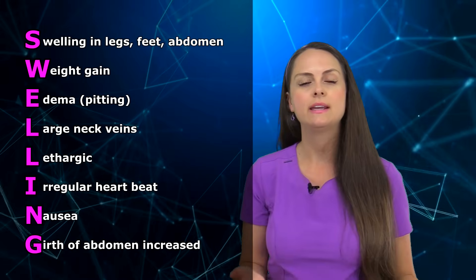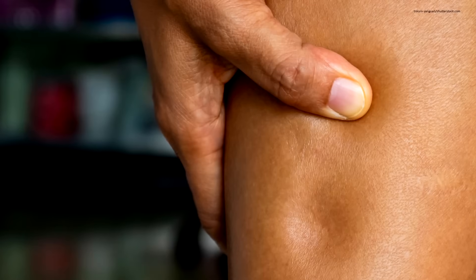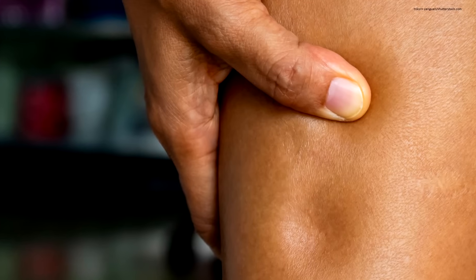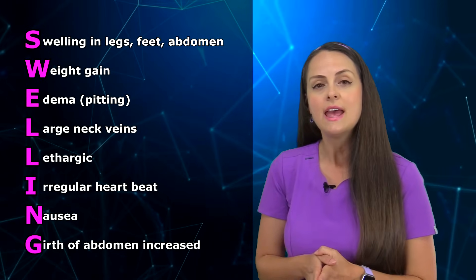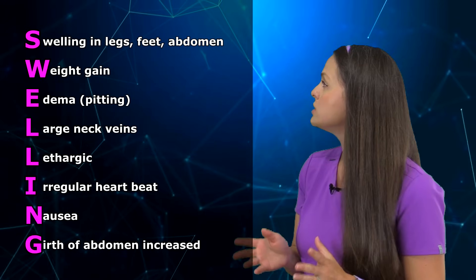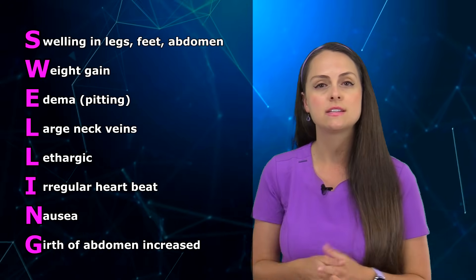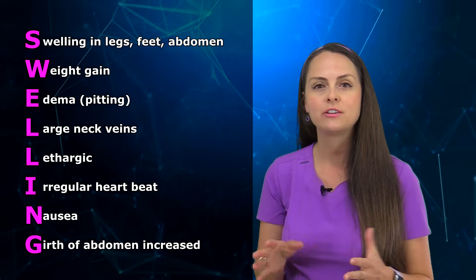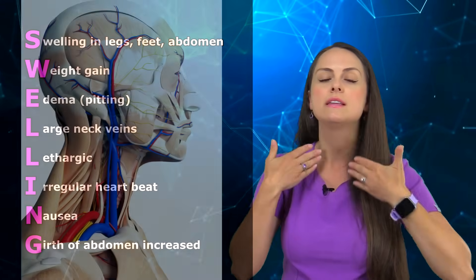And you will see this in the lower extremities. So whenever you take your finger and you press in this area, and you remove your finger, you will actually see an indentation from where you press. And then L is for large neck veins. And that is that jugular venous distension I was talking about earlier, that is just where that blood is backing up, and you will see the enlarged veins in the neck.